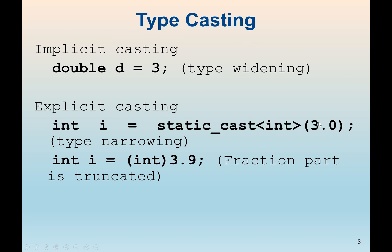We have explicit casting, where we explicitly convert the data type ourselves. If we cast a decimal number — a double or float — to a whole number, that is type narrowing. Implicit casting depends on the data types involved in the operation. For example, dividing a decimal number by an integer gives a decimal result. When we explicitly cast 3.9 to int, we get 3 — the fractional part is truncated and removed.